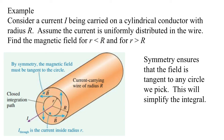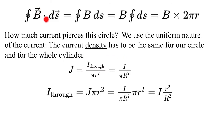Consider a current I being carried on a cylindrical conductor with radius R. Assume the current is uniformly distributed in the wire. Find the magnetic field for r less than R and for r greater than R. Unlike Gaussian problems where you needed weird situations to get symmetry, it's not unusual to have a long cylindrical conductor — that's basically what a wire is — and it's generally not unusual for the current to be uniformly distributed. This is a practical effect that comes up a lot.